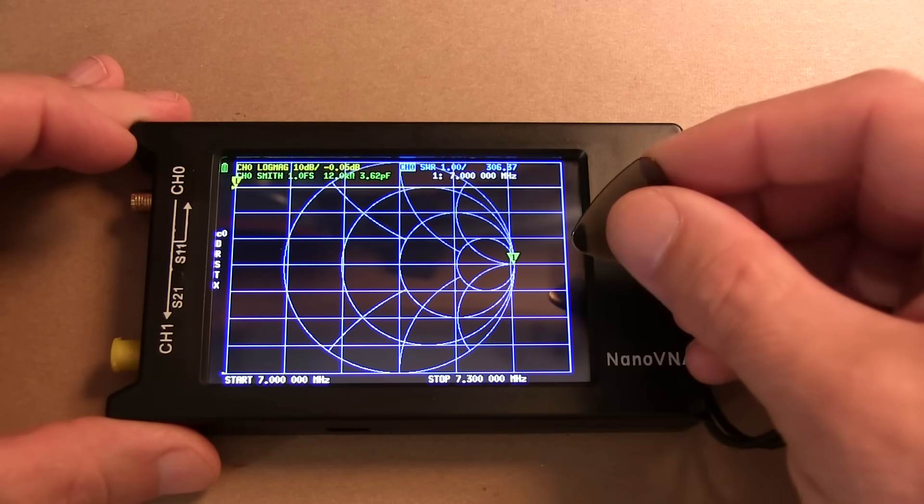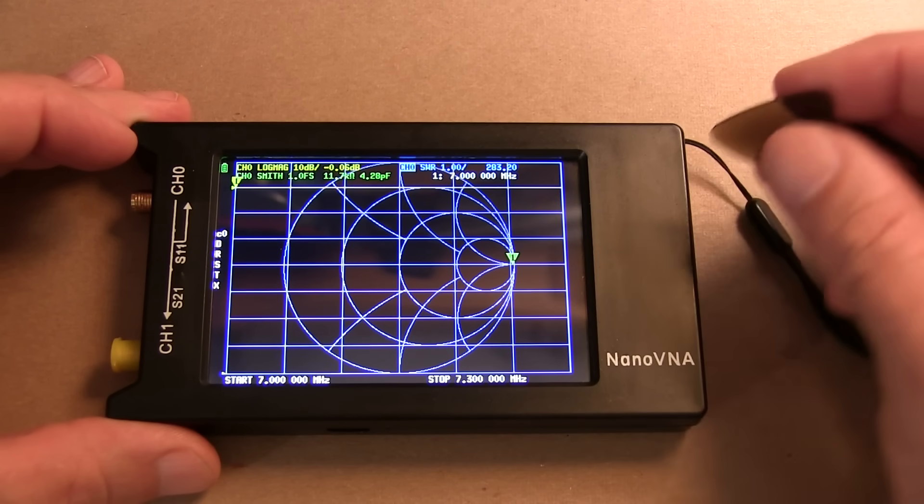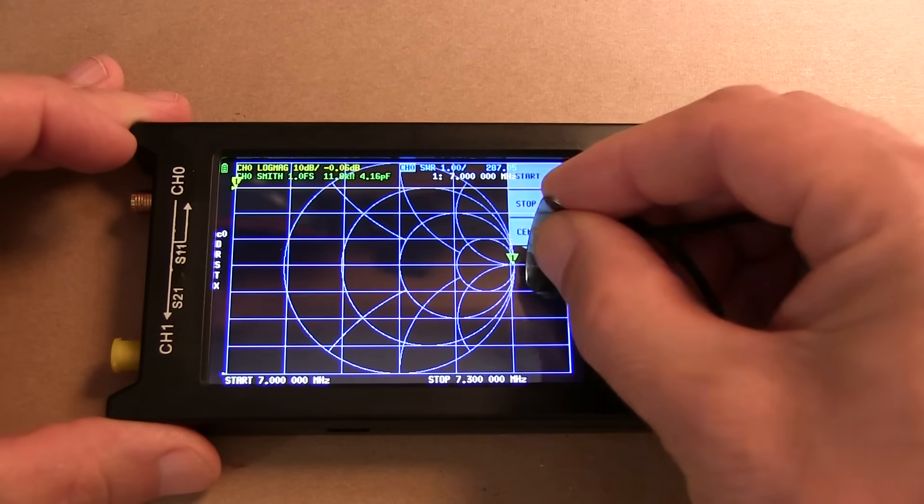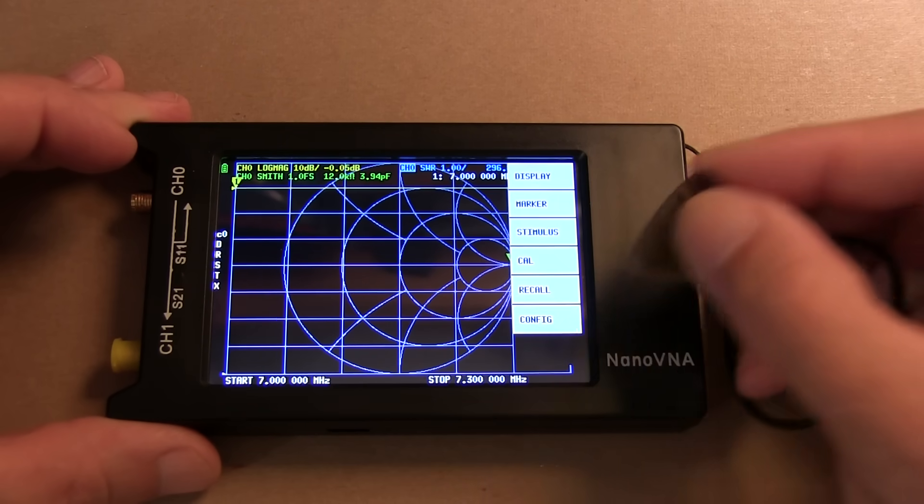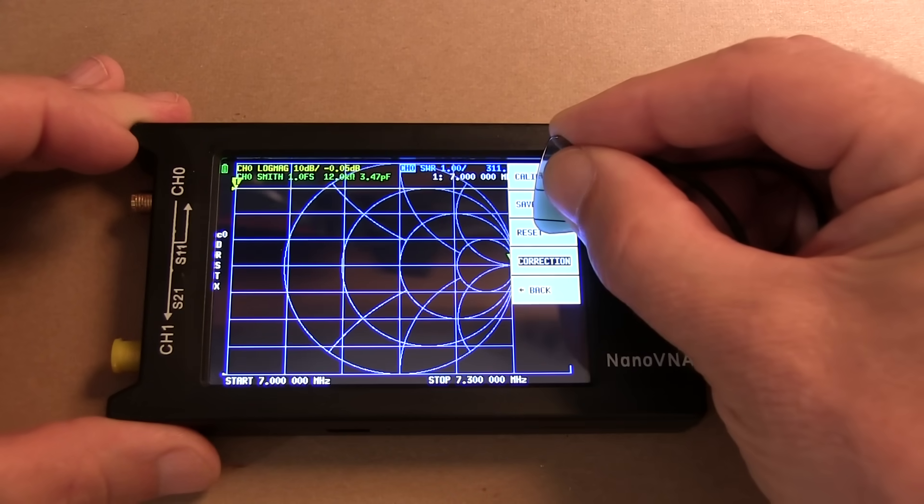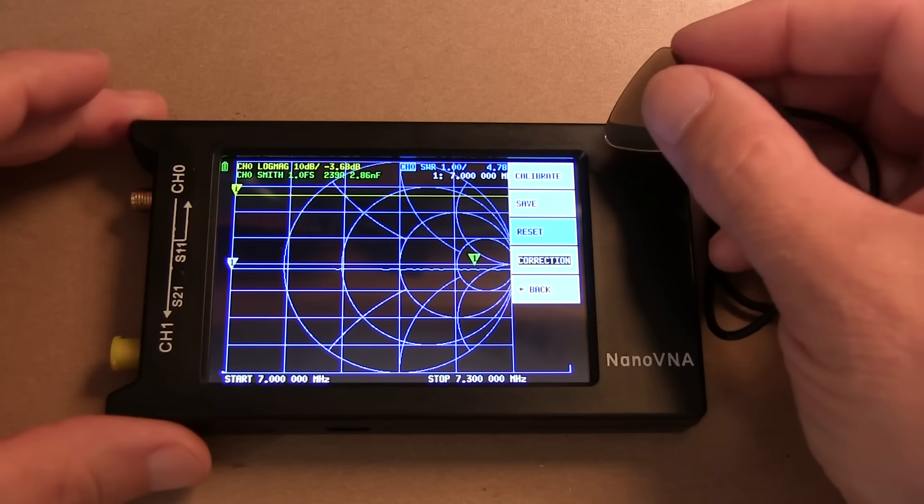The next thing we want to do is run the calibration, because the default calibration is going to have too coarse of granularity to measure over this limited frequency range that we have. So we bring the menu back up, go back, and hit Cal, and go to Reset to reset the existing calibration. You can see that those calibration indicators have gone away over here.